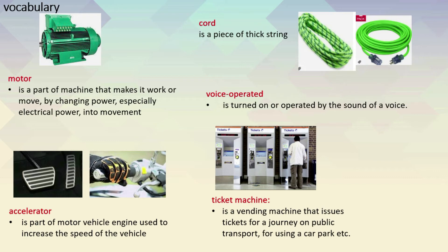What are these machines? They are ticket machines. A ticket machine is a vending machine that issues tickets for a journey on public transport, for using a car park, or similar things. A vending machine is a machine from which you can buy drinks, chocolates, or similar things by putting money into it. So a ticket machine gives you a ticket when you put money into it.